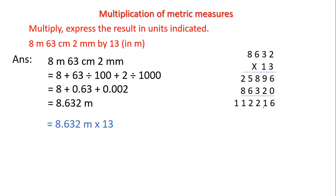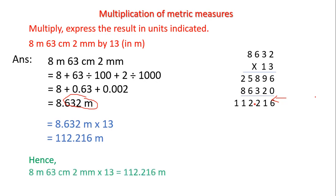The product is 112216, but there are three decimal places in the original number. So we place the decimal point three places from the right, which puts it between the second and third digits from the right. Therefore the final answer is 112.216 meters.